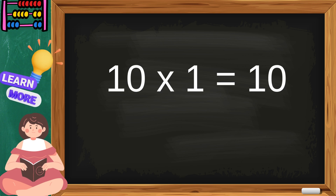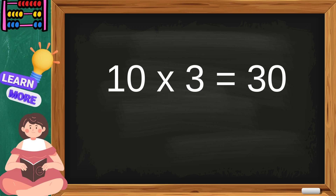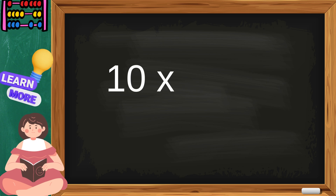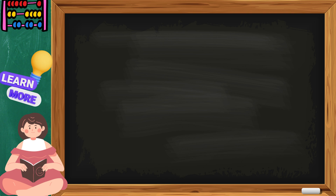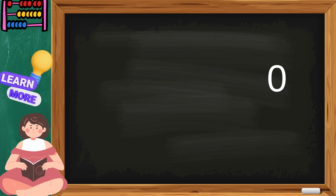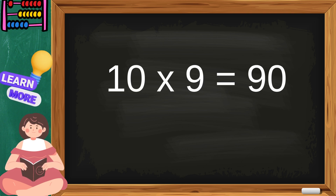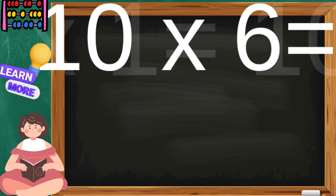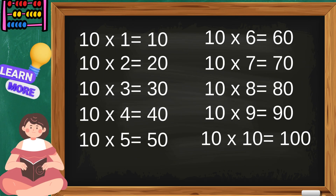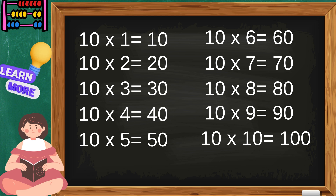Ten ones are ten, ten twos are twenty, ten threes are thirty, ten fours are forty, ten fives are fifty, ten sixes are sixty, ten sevens are seventy, ten eights are eighty, ten nines are ninety, ten tens are one hundred. The table of ten.